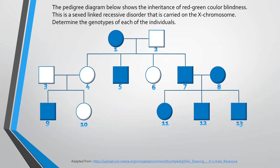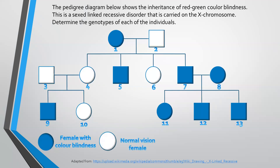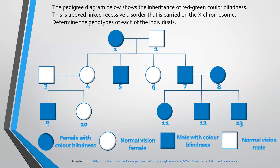For the key: the circle which is in blue represents a female with colorblindness. A circle that's plain white would represent a normal vision female. A square that's shaded in blue represents a male with colorblindness. And a square that is white inside would represent a normal vision male.